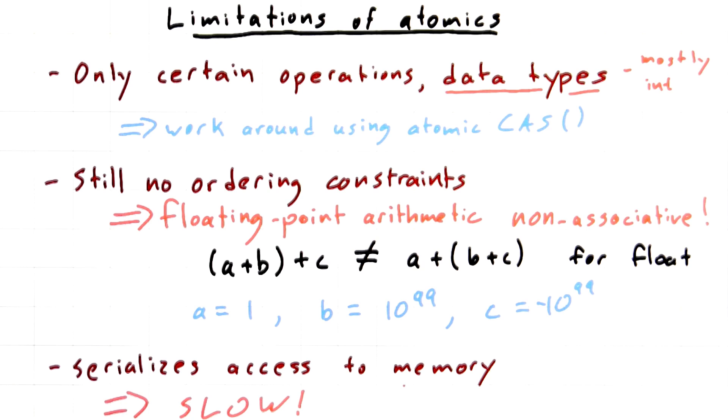And the final thing to be really aware of with atomics is that there's no magic happening under the hood. The GPU is still forcing each thread to take turns getting access to that memory. It's serializing the access to memory among the different threads, and this can make atomic operations very slow if you're not careful. Let's look into that.